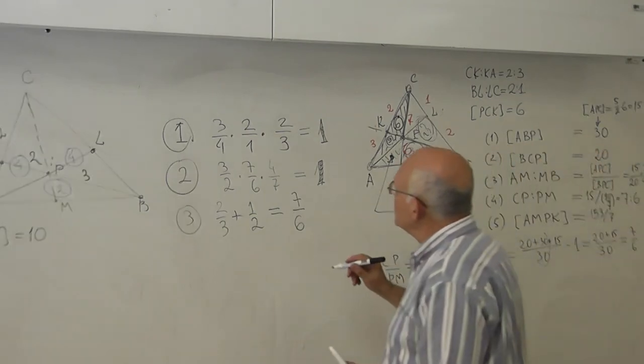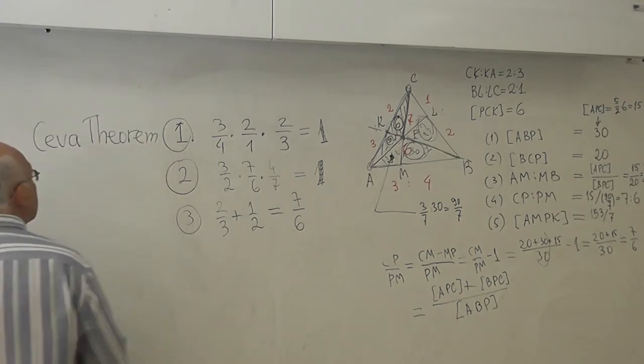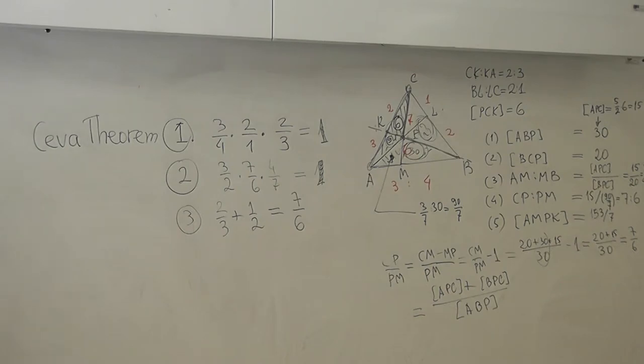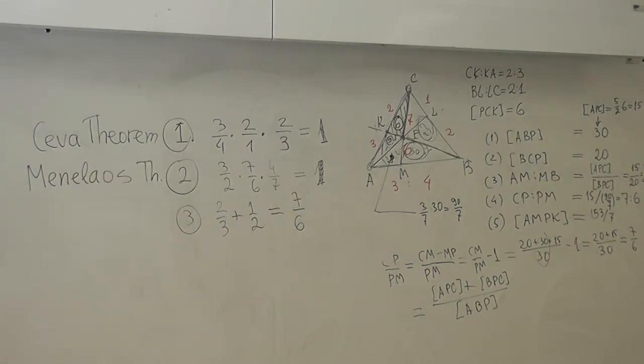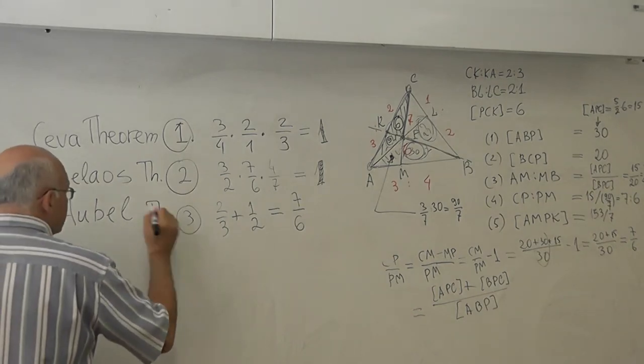Number one is called Ceva. This is called Menelaus. Menelaus is a Greek. And this is one, this is called Van Aubel. There is one more. There is the fourth one which coincides with one of these.